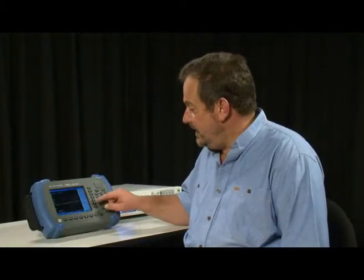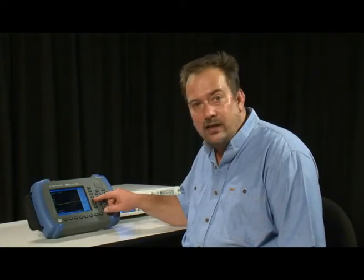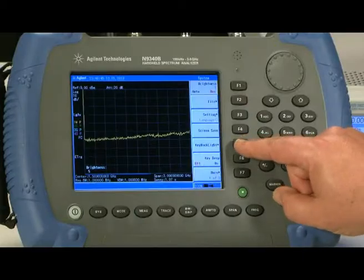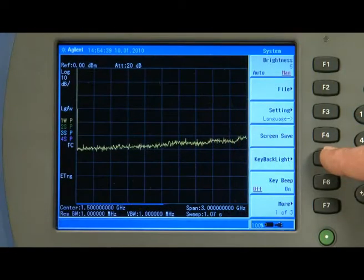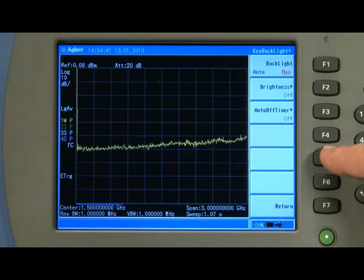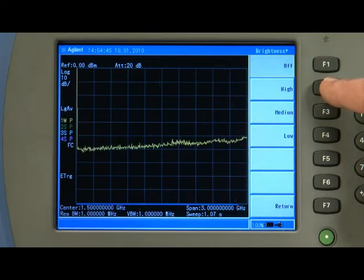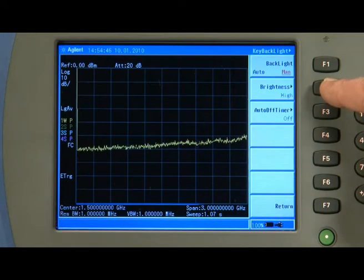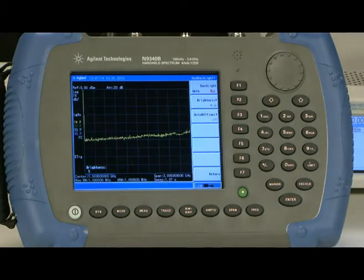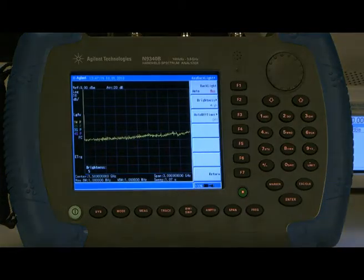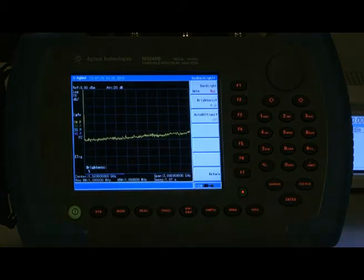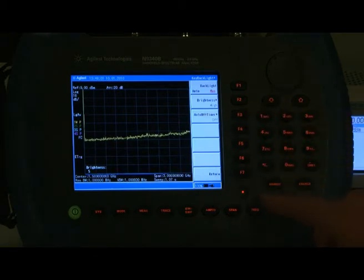There is another useful function if you are working at night or in a dark communications room. The key backlight button if I press that I can turn the brightness of the key backlights on. So I press brightness and let's set it to high. Now if we dim the studio lights you can see that all of the buttons are now backlit and easily viewable in dark conditions.